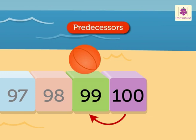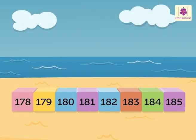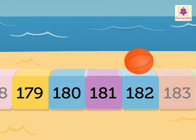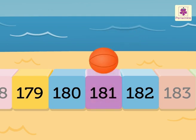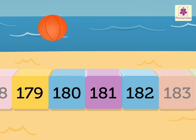Numbers that come before a given number are also called predecessors. Here, the number 99 is a predecessor. Let us try one more example. Which three numbers come before the number 182? Yes — 181, 180, and 179.